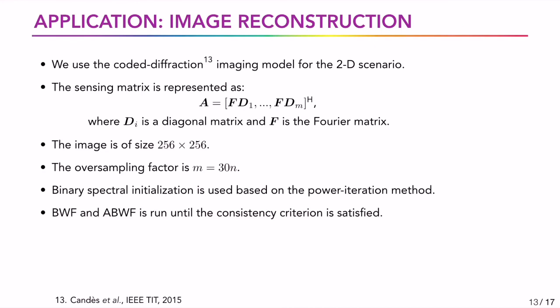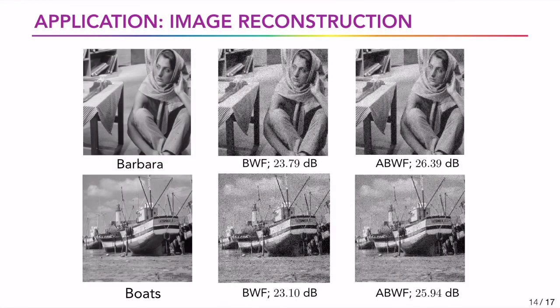To demonstrate the lower complexity of BWF and accelerated BWF, we experiment with the 2D phase retrieval problem. We use coded diffraction imaging. We employ coded Fourier patterns where the oversampling factor represents the number of images taken with different patterns. The image size considered is 256 x 256. We use the power iteration method to perform spectral initialization and compare the performance of both BWF and ABWF. We illustrate the 2D PR results on Barbara and boat images. Here too, ABWF gives better PSNR compared to BWF.